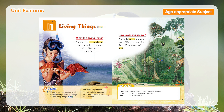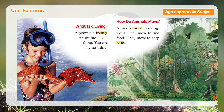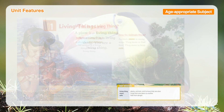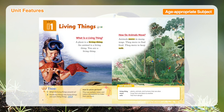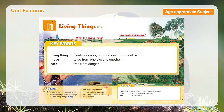Students will also be able to understand the abstract science concepts through student-friendly explanations in each story with colorful illustrations and photographs. Students will also be able to see how the keywords introduced on the bottom of the page are used in context.